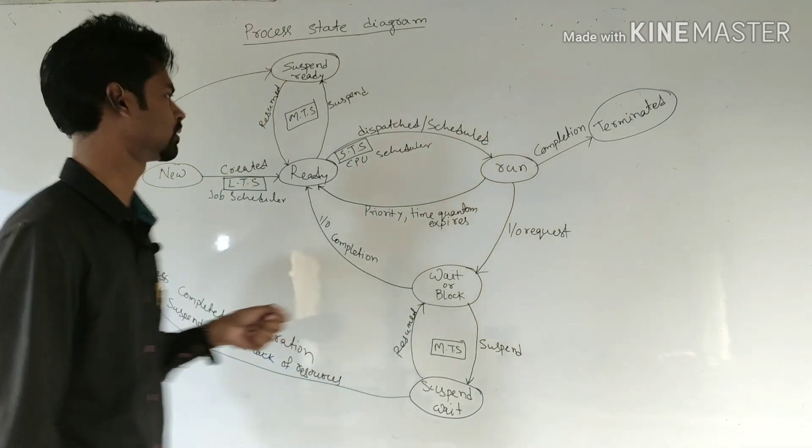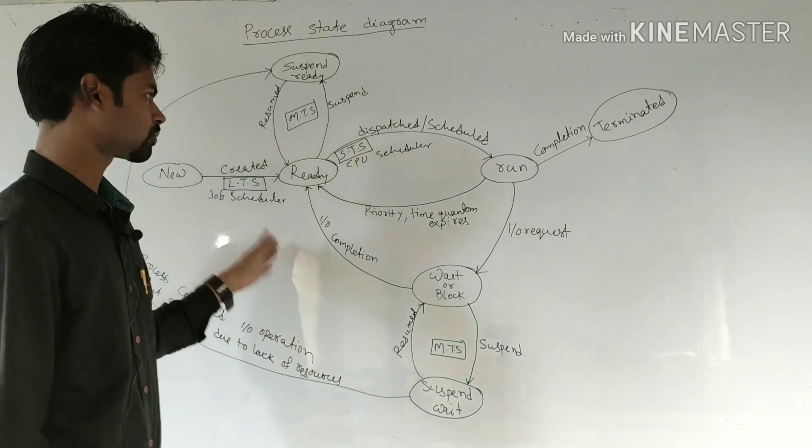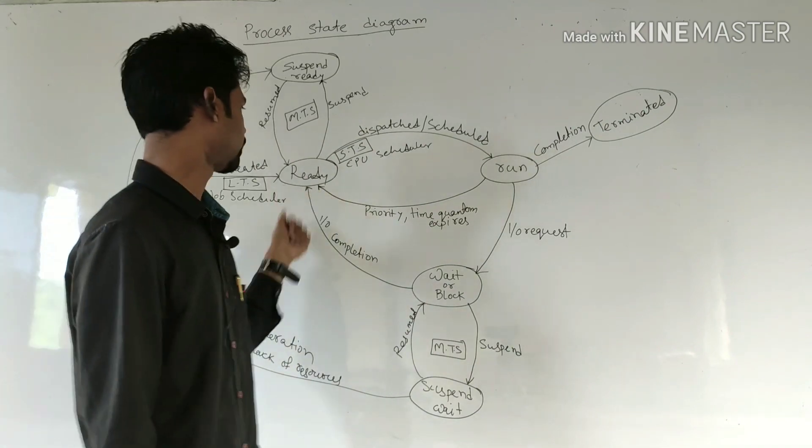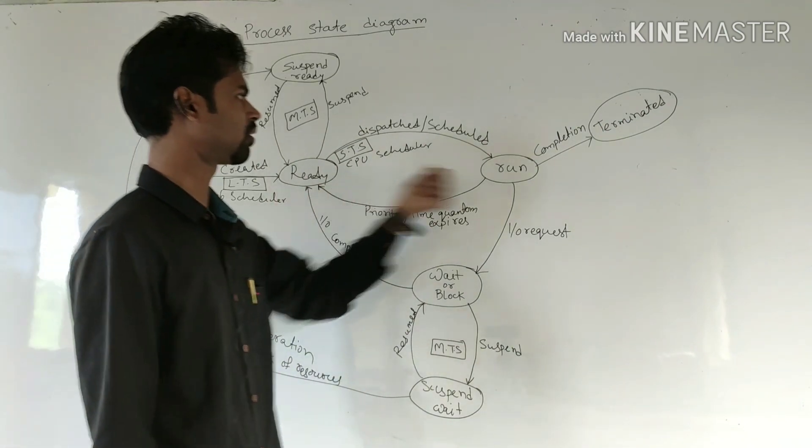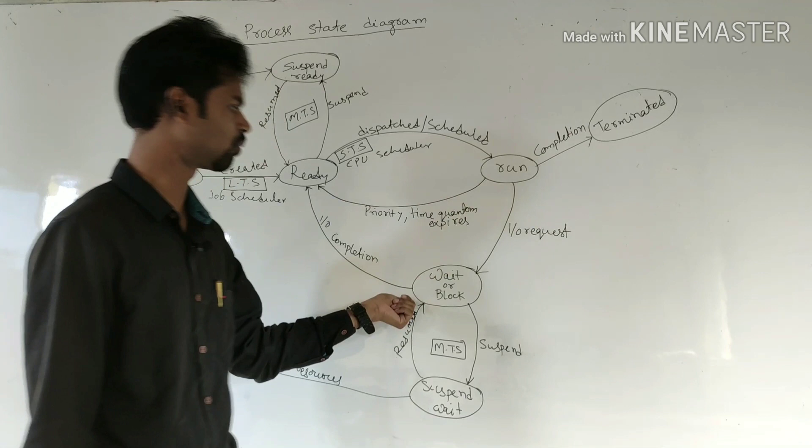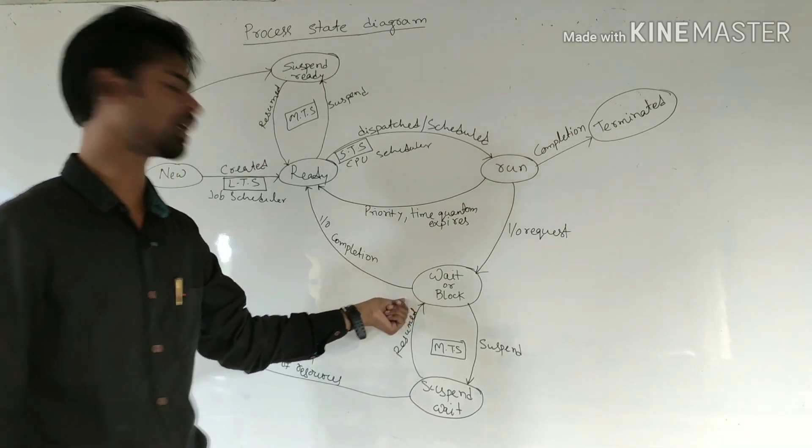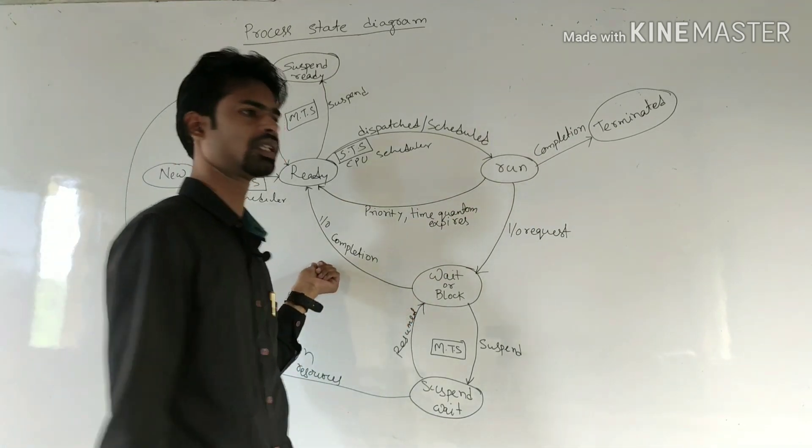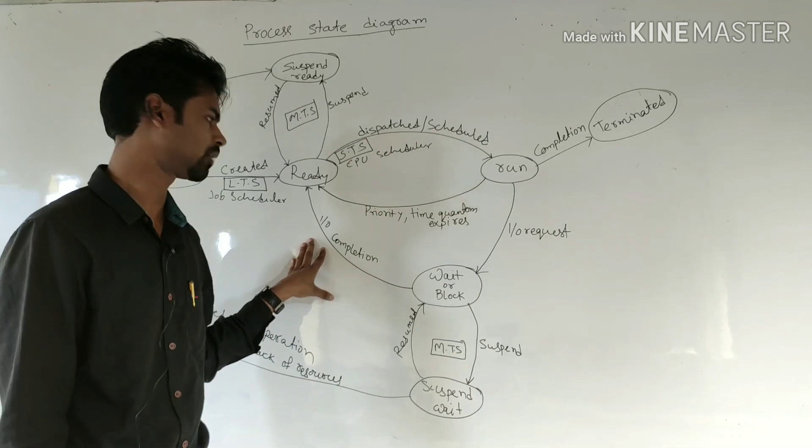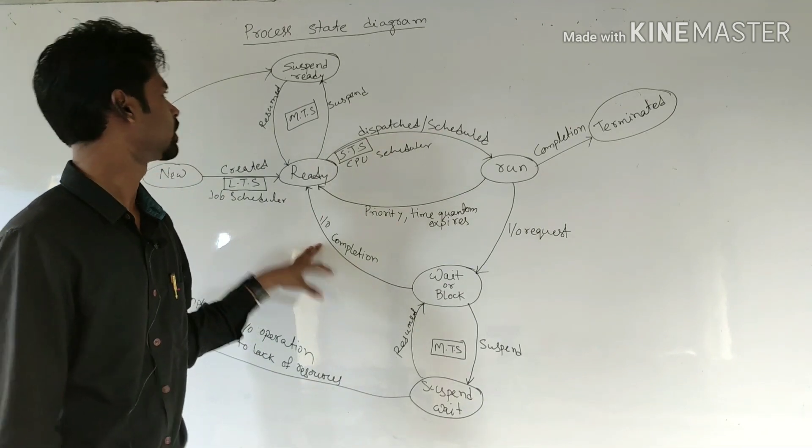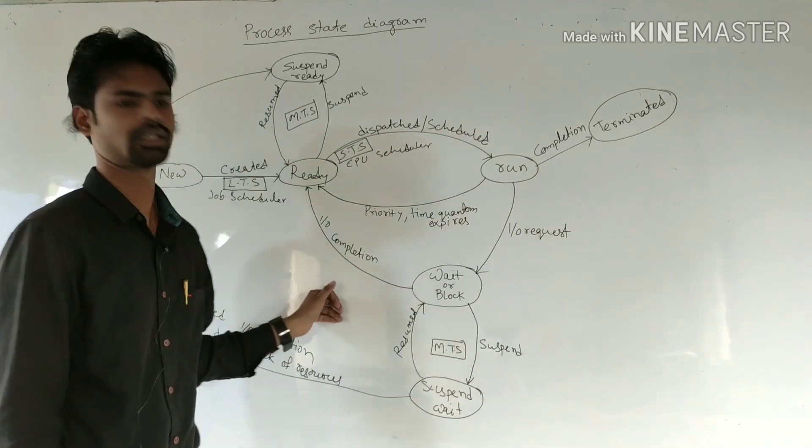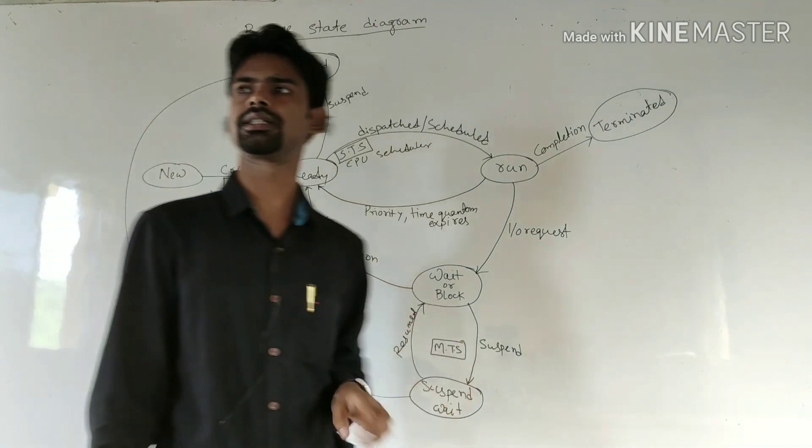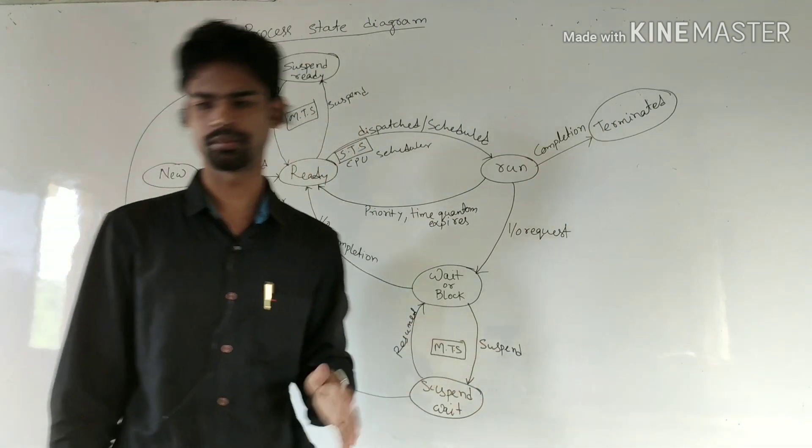Next important thing is when a process is at ready state, running state, or wait or block state, at that time the process is residing in the main memory. In other states, it will be residing in the secondary memory.